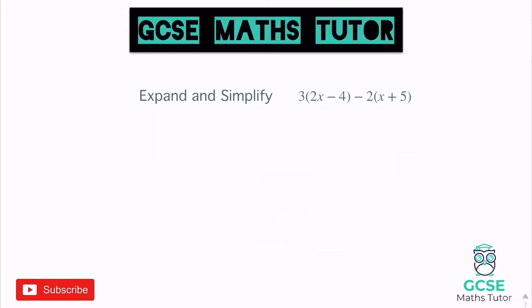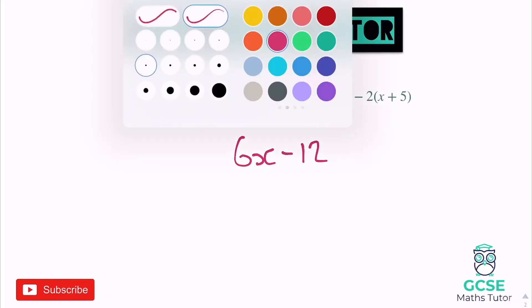Let's have a look at another one: expand and simplify. We've got a minus 2 in the middle, so we need to be careful. We'll treat it the same way — times the first bracket by 3: 3 times 2x gives 6x, and 3 times negative 4 gives negative 12.